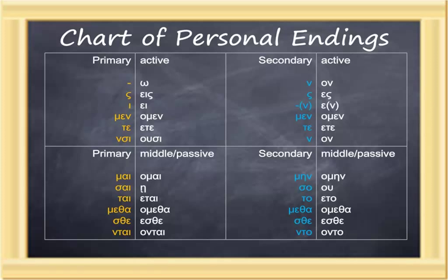An alternate is san for that sixth form. The secondary middle passives are: main, so, to, metha, sthe, nto. The far right column of white endings includes the connecting vowels omicron and epsilon. And again, in the second item in the secondary middle passives, epsilon plus sigma omicron contracts to omicron upsilon.